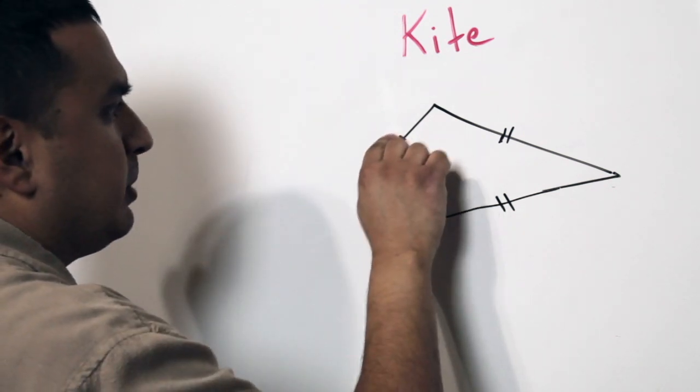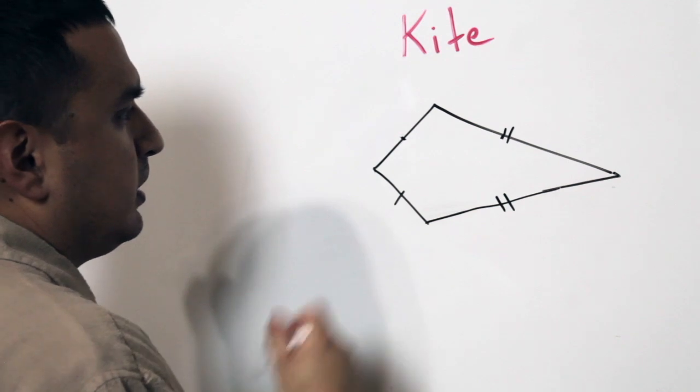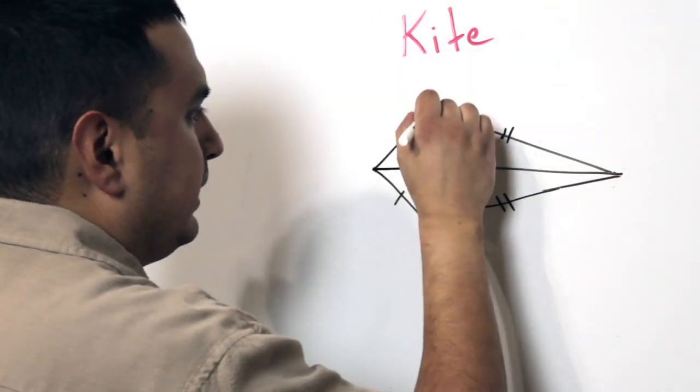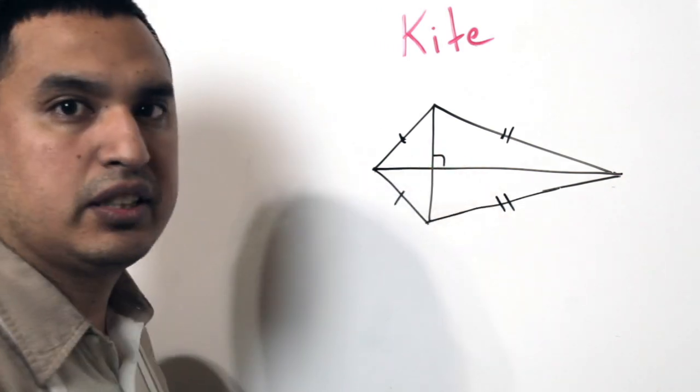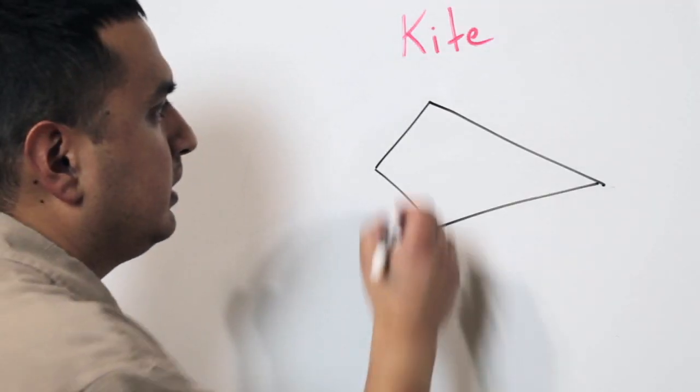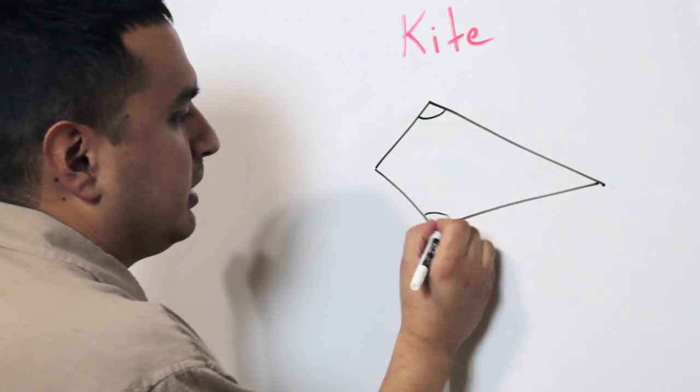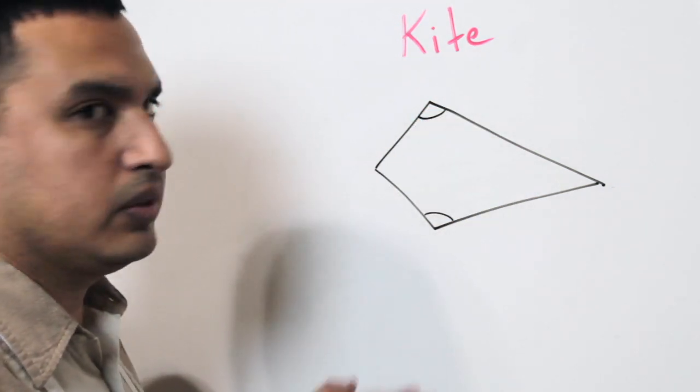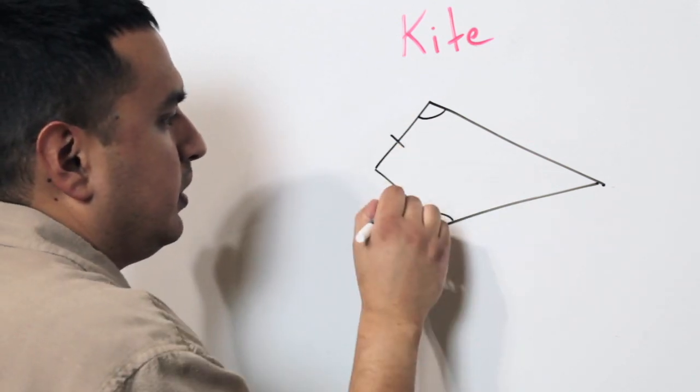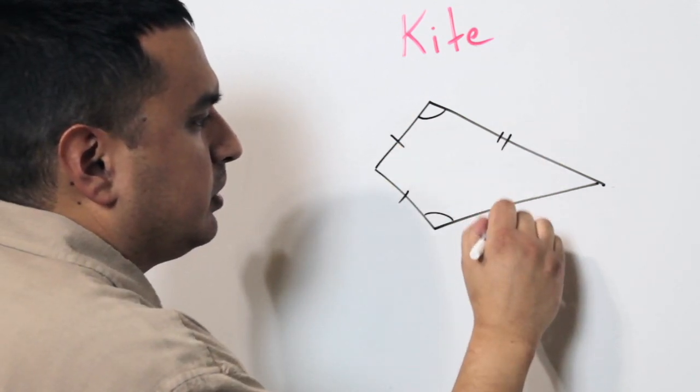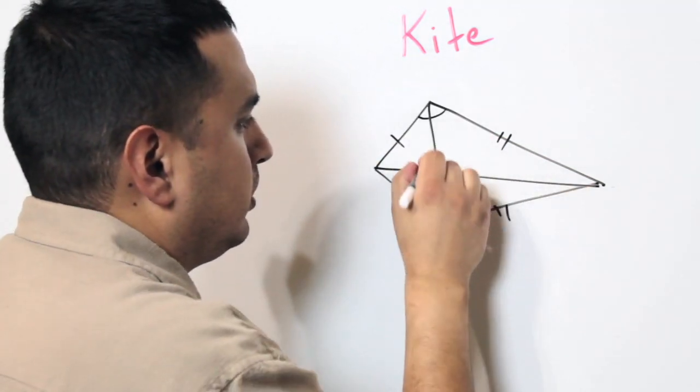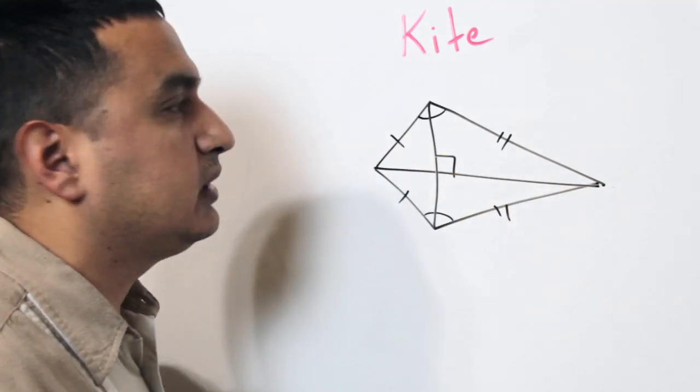What's special about the properties of a kite is that the diagonals are always perpendicular. The other important property of a kite is that these opposite angles are congruent. All right, so again, we have opposite angles that are congruent. We know that these opposite sides are congruent. And then we also know that the diagonals are perpendicular. That's what makes a kite a kite.